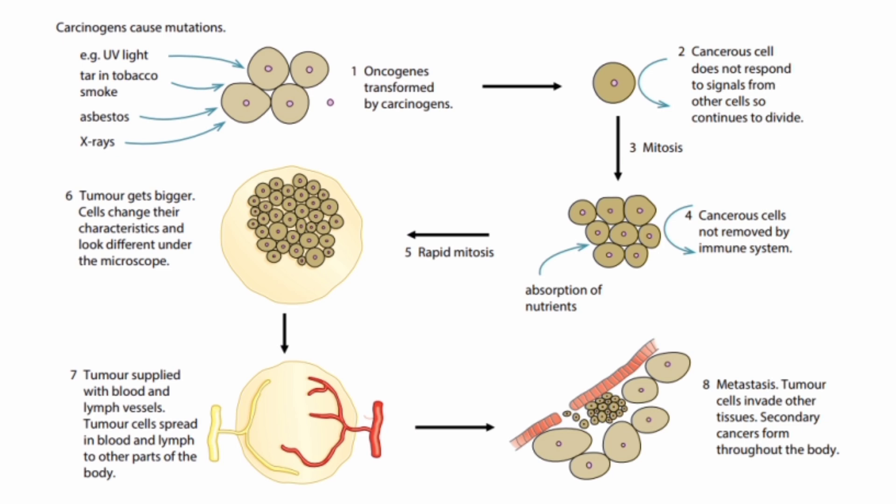Number seven: tumor cells can enter the lymphatic system. Lymph cells in the blood carry the cancer cells, which is why we will discuss the lymphatic system separately. The tumor spreads rapidly through mitosis everywhere in the body, and at the last stage we call this metastasis — where tumor cells invade other tissues and secondary cancers form throughout the body.